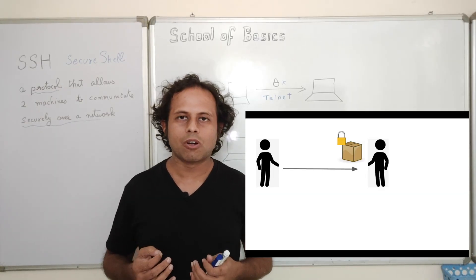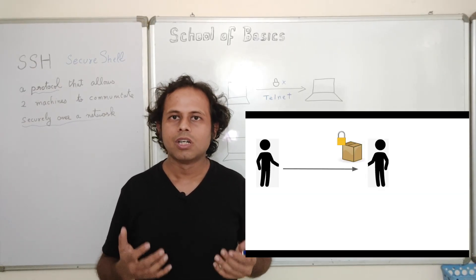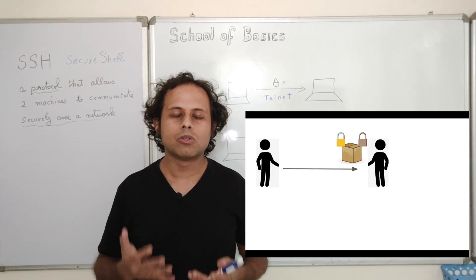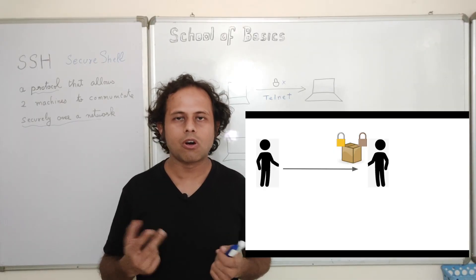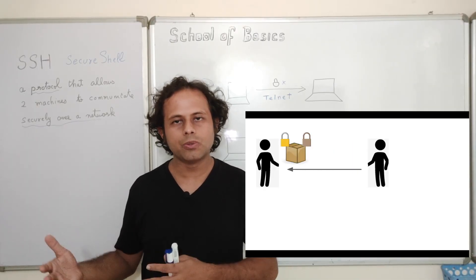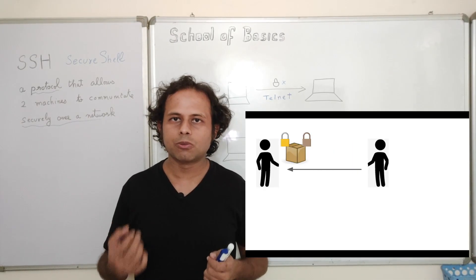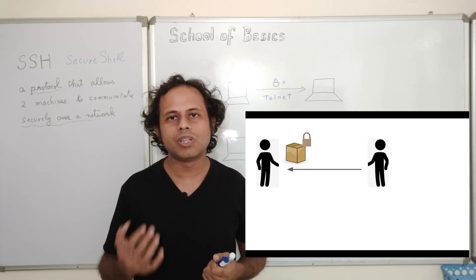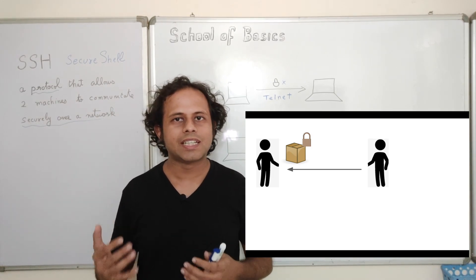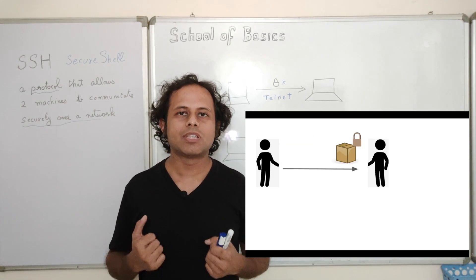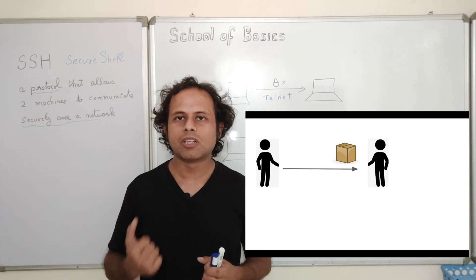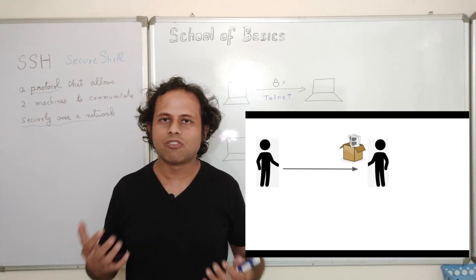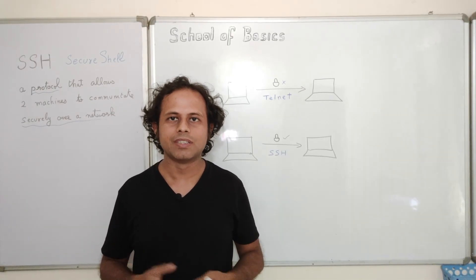You put a lock on the box and send it to your friend. You have the key, so your friend cannot open it. Your friend puts his own lock on the box — now it has two locks — and sends it back to you. You open your own lock since you have the key, and the box now has only your friend's lock. You send it again to your friend, who can now open it with his key. This is how information and data can be exchanged securely.